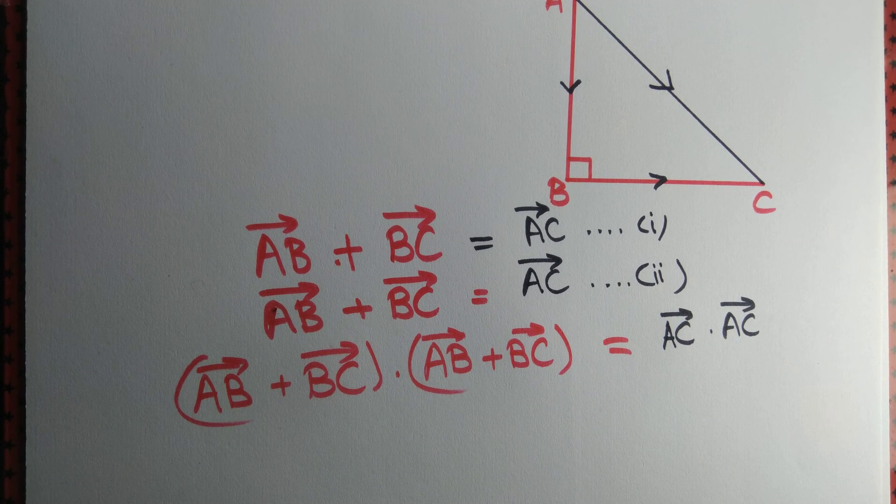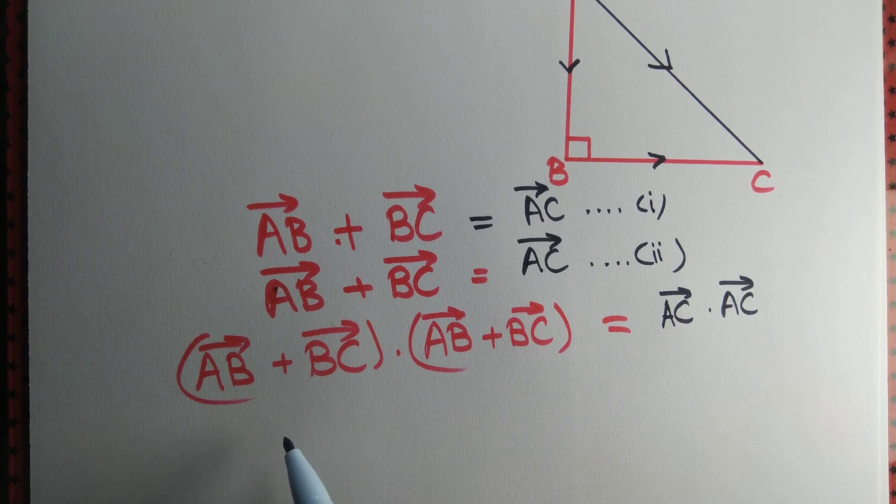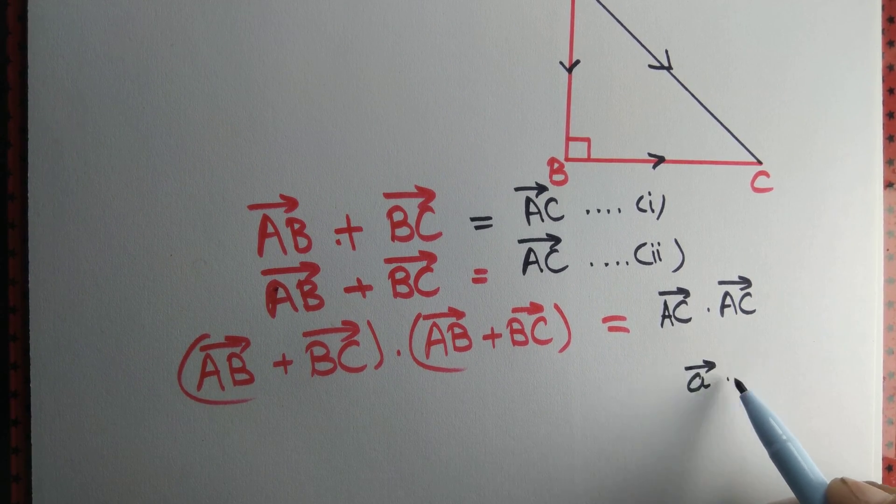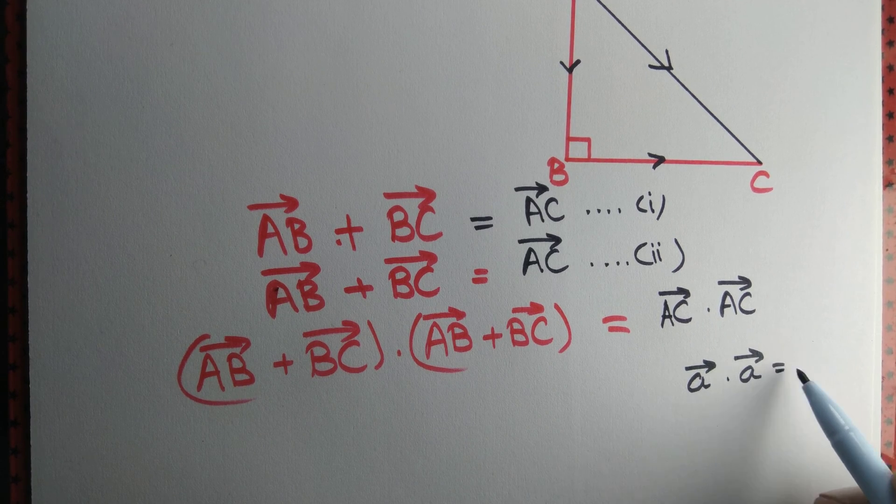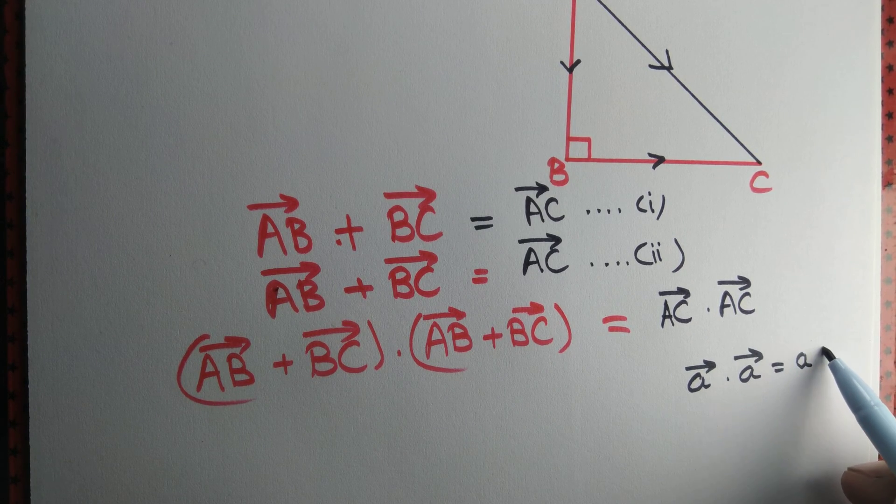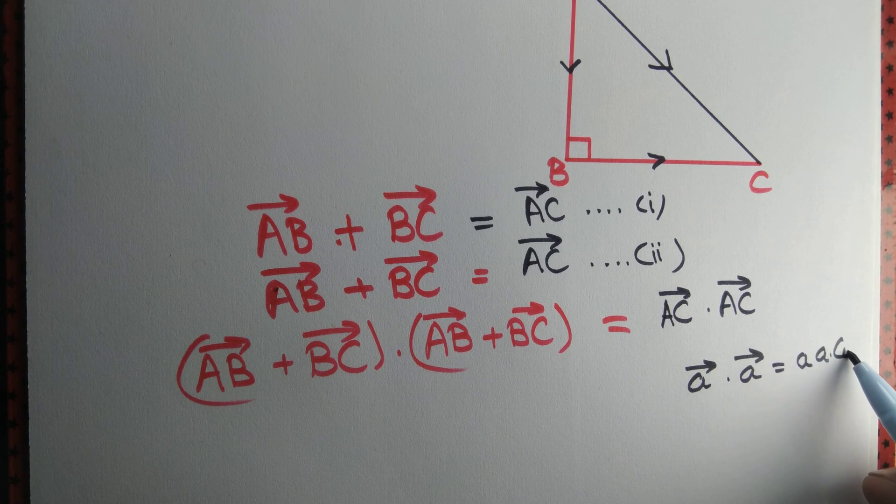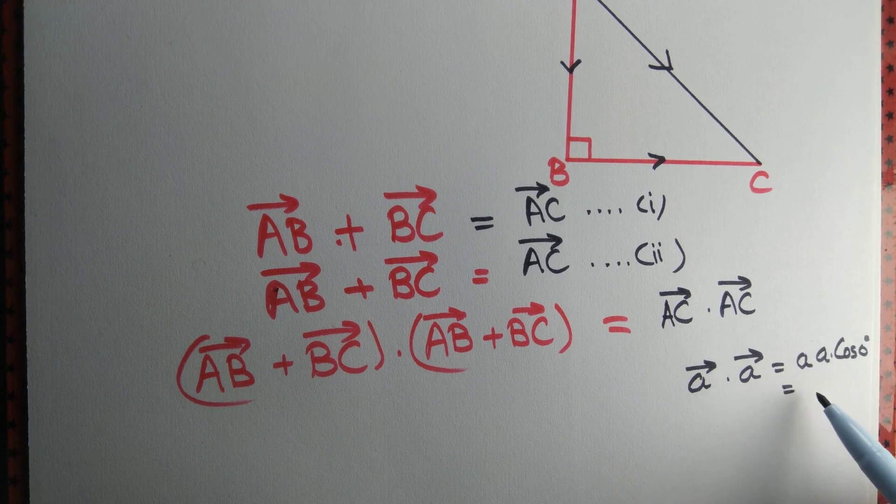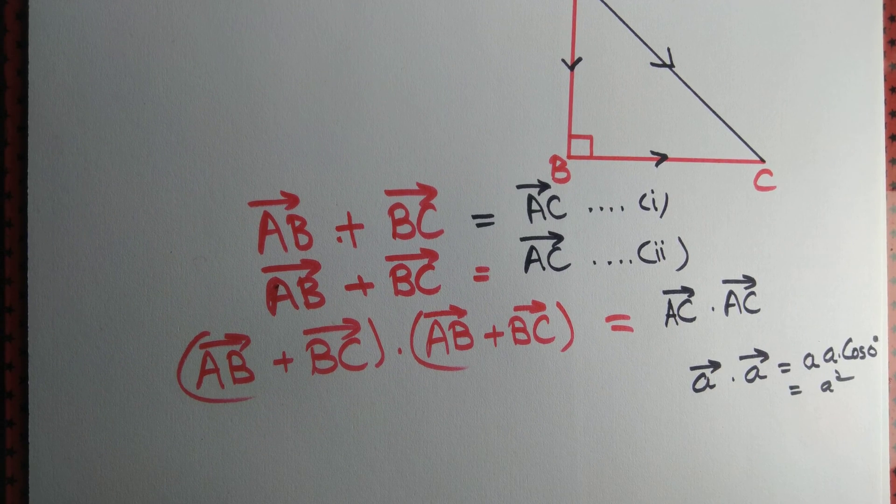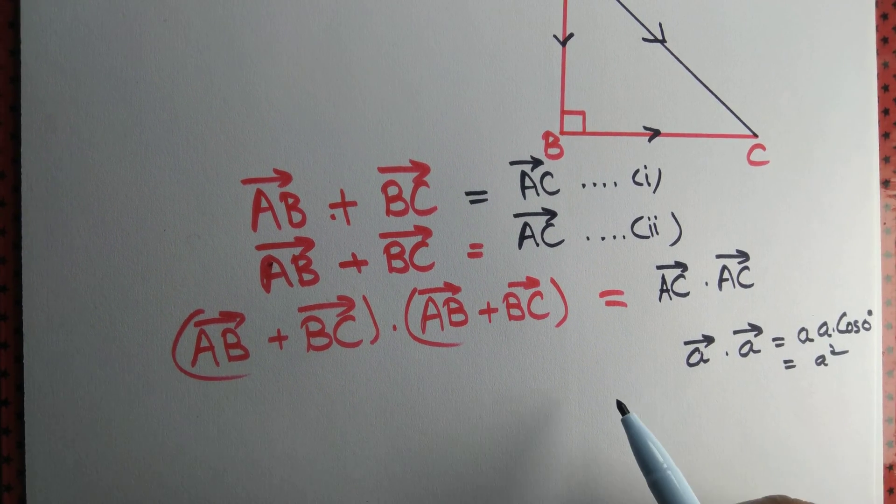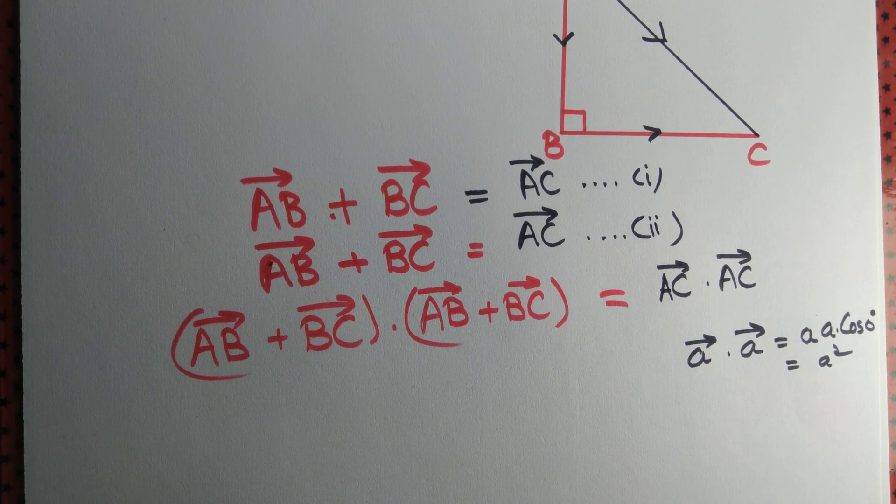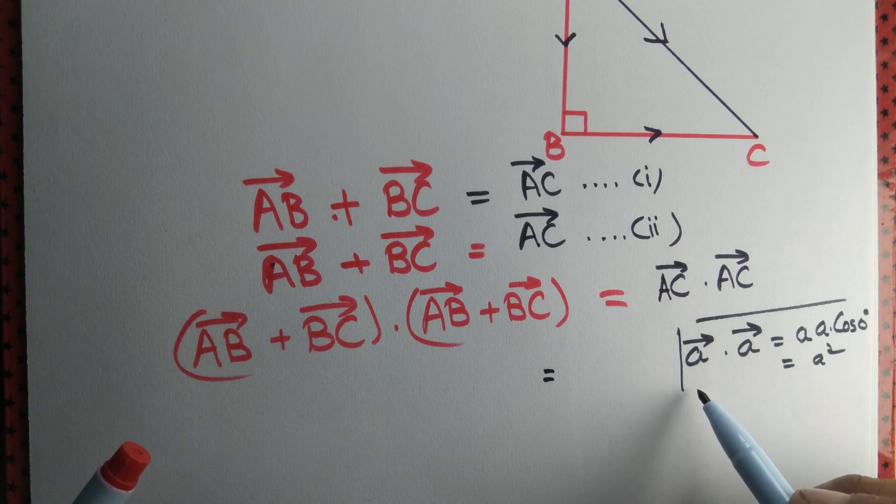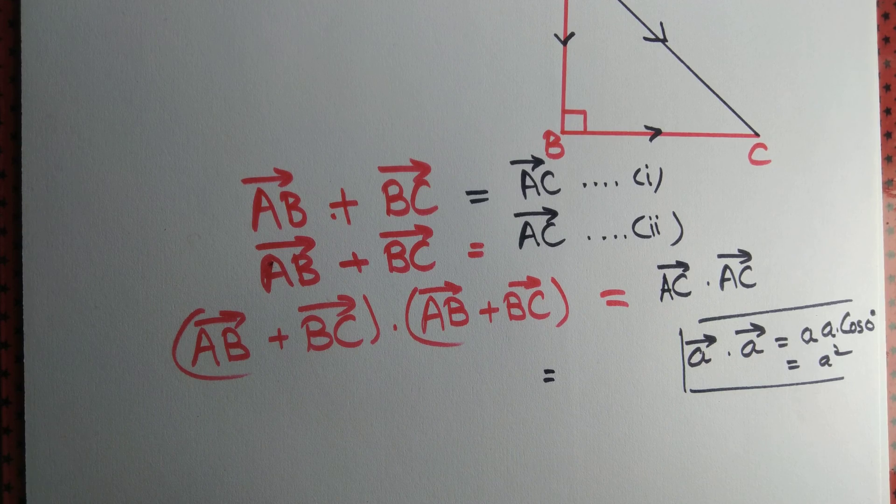Now we know the property of dot product that A dot A, by definition, is magnitude of A, magnitude of A, times cos of 0 degrees because angle between A and A is 0 degrees. So this is A square. So right hand side can simply be written as AC square.